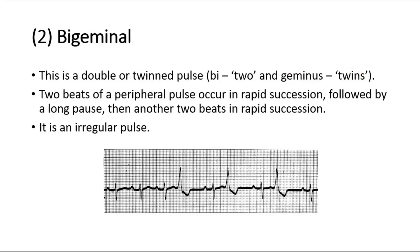The second type of arterial pulse is the bigeminal pulse. This is a double or twinned pulse — bi means two, and geminis means twins. Two beats of a peripheral pulse occur in rapid succession, followed by a long pause, then another two beats in rapid succession. It is an irregular pulse.